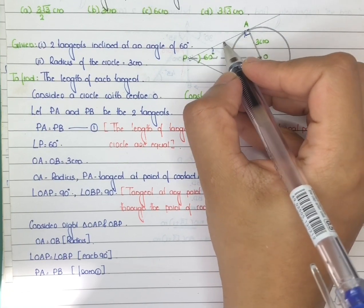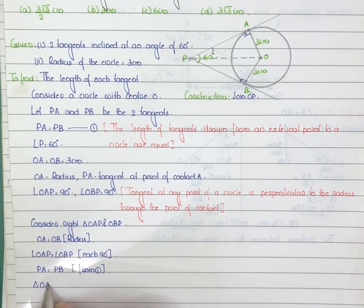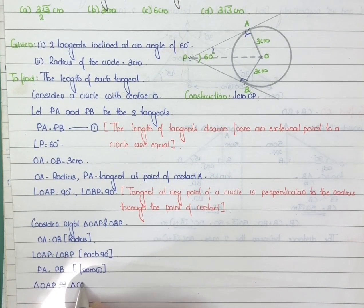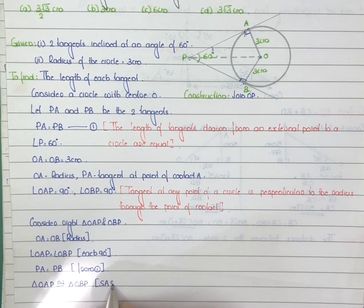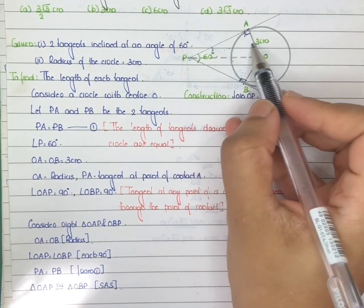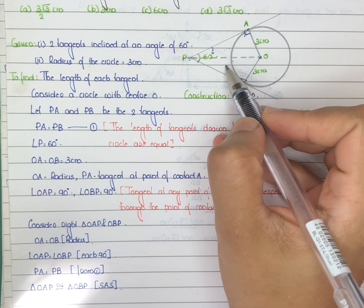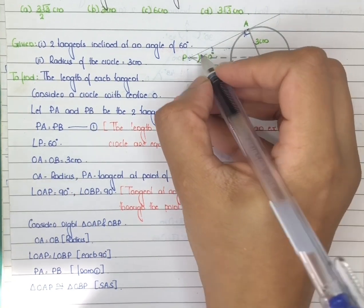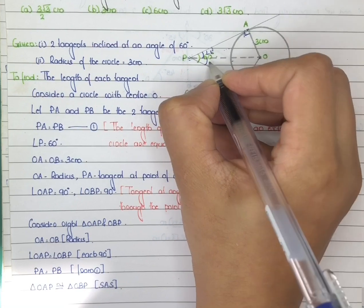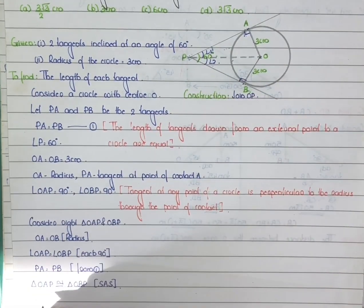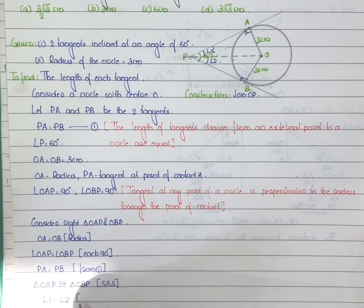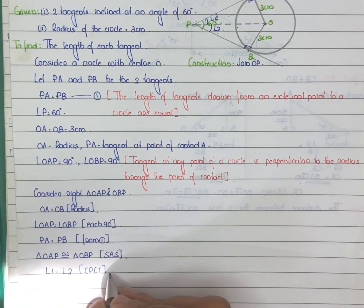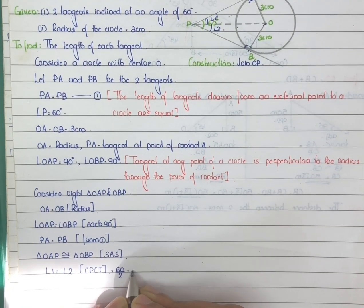By SAS criteria, triangle OAP is congruent to triangle OBP. From this congruency, OP is a common side, and the two corresponding angles are equal — mark them as angle 1 and angle 2. This implies angle 1 is equal to angle 2 by CPCT. The total angle at P is 60 degrees, so angle 1 is equal to angle 2 is equal to 60 divided by 2, which is equal to 30 degrees.